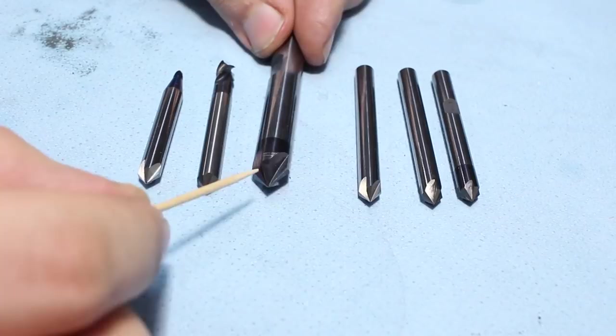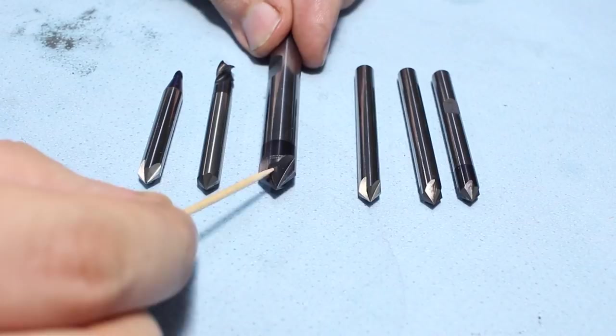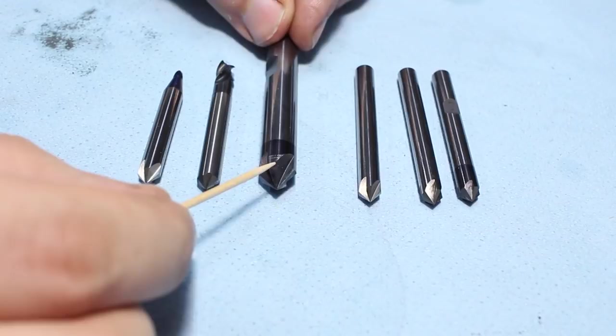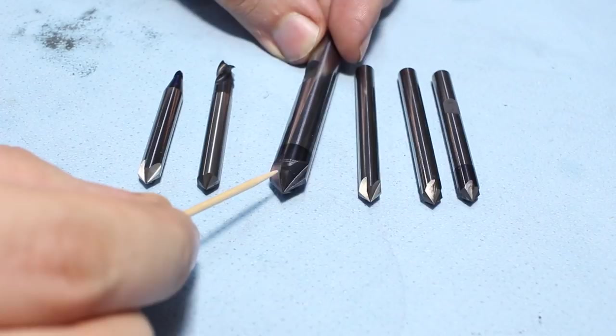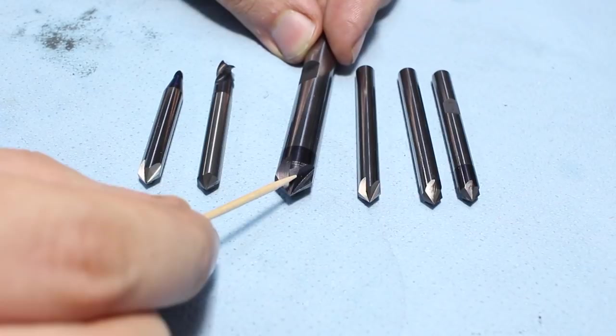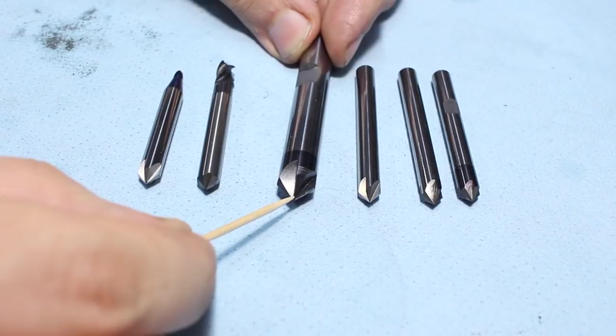When regrinding these cutters, we only grind the primary relief. They only have a primary relief, that's usually about 10 degrees. That's hard to show, that's this flat here.